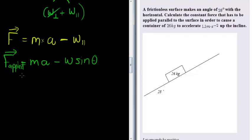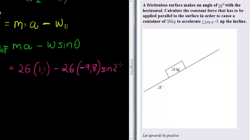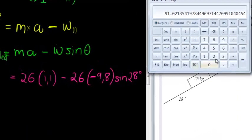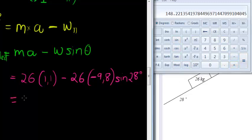Now let's substitute to get the answer. The mass is 26 kilograms, the acceleration is 1.1 meters per second squared, and the weight is mass times gravity — 26 times negative 9.8, since upwards is positive — times sine of 28 degrees. That gives us 148.22 Newtons.